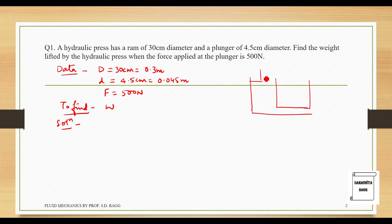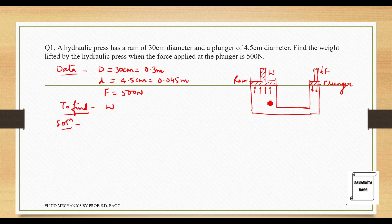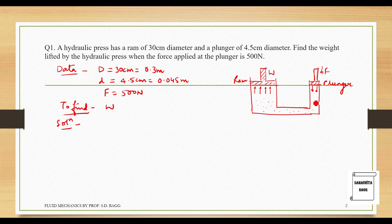This is the ram end where the diameter is given as 30 cm and here the diameter is given as 4.5 cm. I am drawing it really thin. So, let's assume that some weight has to be lifted from here. This will be some weight W and here we are applying force. So, this side is F and this side we are going to apply force. This is the plunger end and this is the ram. There is some fluid in between.